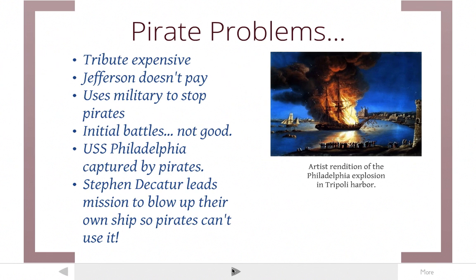Washington and Adams paid the pirates tribute money to protect our trade ships. Jefferson, however, thinks the tribute is too expensive. He doesn't like that the pirates are pushing the US around, and he decides to stop paying the tribute and instead use force, sending the Navy out to the area. That does not go so well at first.